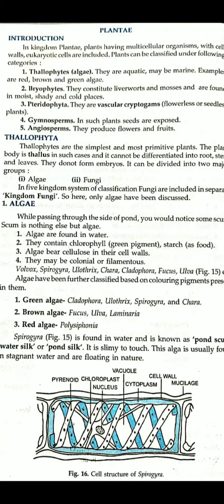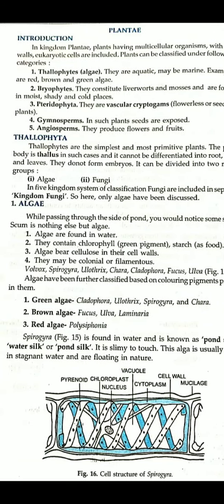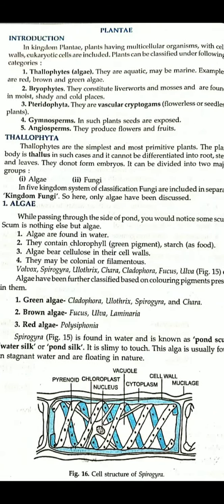The first category is Thallophytes. These are algae — aquatic, maybe marine. For example, these are red, brown and green algae.